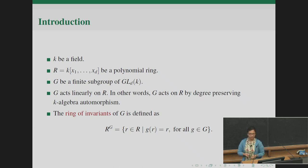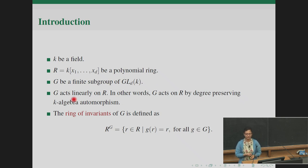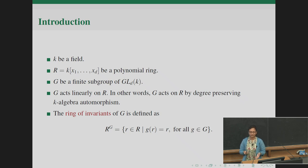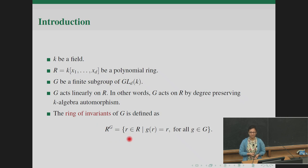The group action we'll be discussing today will be a finite subgroup of GL_d(k). The action is linear on the polynomial ring R — in particular it is a degree-preserving k-algebra automorphism. Once we have this setup we can talk about elements of the ring which are invariant under this group action. The collection of all such elements is called the ring of invariants, denoted R^G.